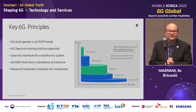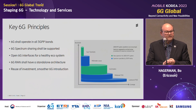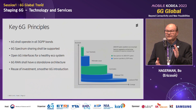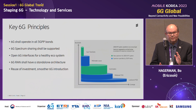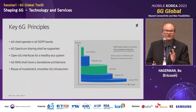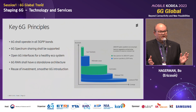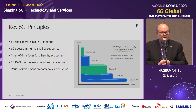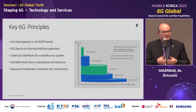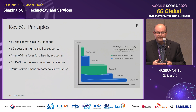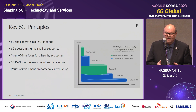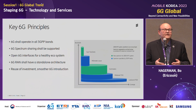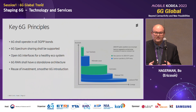A couple of words on 6G principles. Frequencies are very important — what is happening next month at WRC-23, specifically the centimeter-range frequencies from 7 GHz upwards, is one area that really needs to be addressed. But most importantly for 6G, we need to be able to operate across all bands, and due to the different physical behavior of different bands, we operate them very efficiently with carrier aggregation — using them in combination.